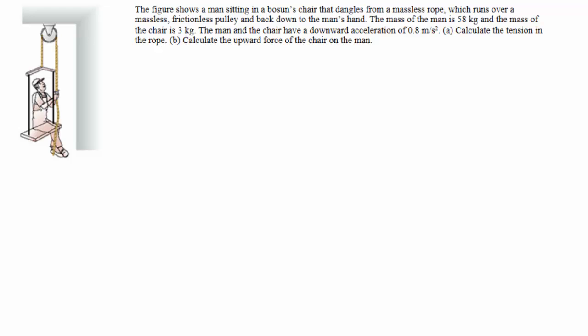This video is part two of a problem looking at a man sitting in a bosun's chair who is pulling on the rope, allowing him to accelerate himself either up or down depending on what the tension in the rope is. In part one, we were given the tension in the rope and calculated the acceleration of the man and the upward force of the chair on the man. In this problem, we're given the acceleration of the man and the chair, and we're going to calculate the tension in the rope and again the upward force of the chair on the man.